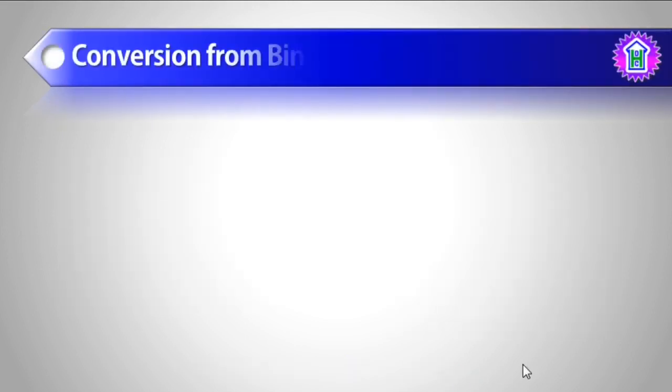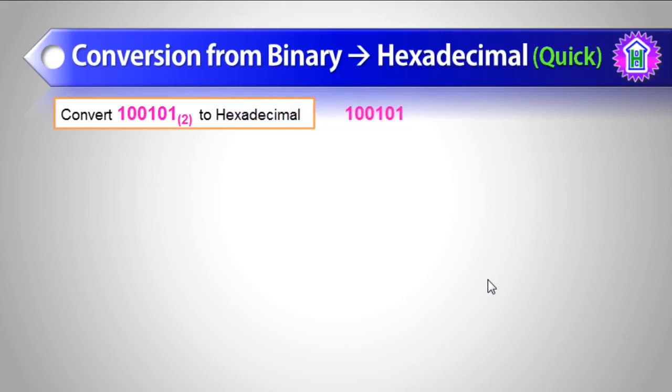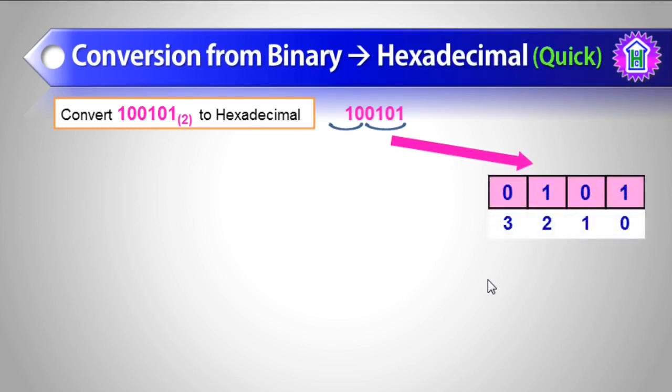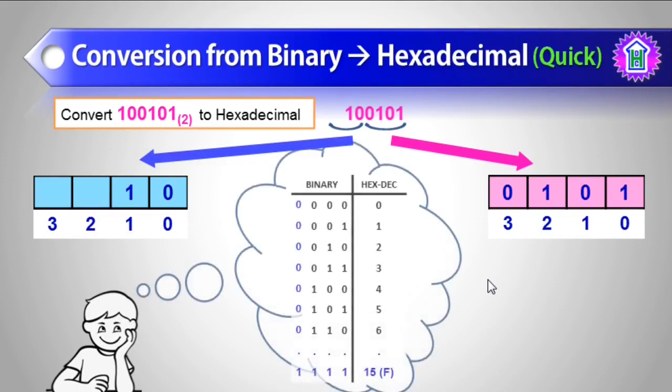Now let us move to the quicker method where we will calculate hexadecimal equivalent of a binary very quickly. Let us take the same number 100101. Let us mark this in 2 groups of 4 binary digits if available, and let us place this in 2 digits. So let us recall the table we have created in the previous slide.